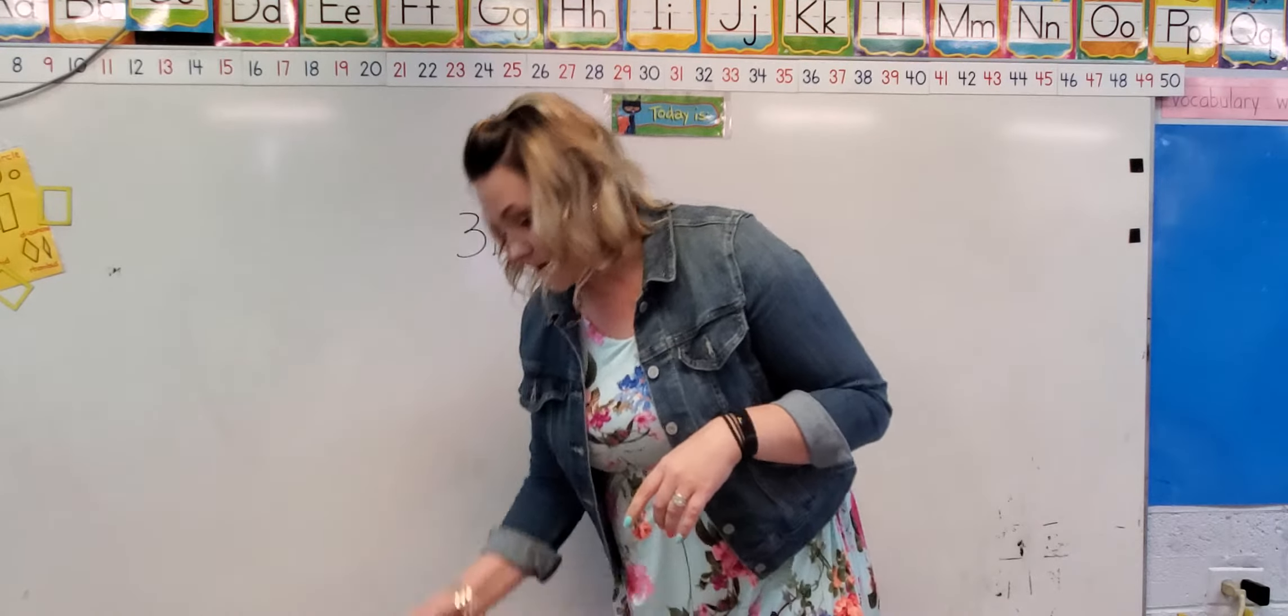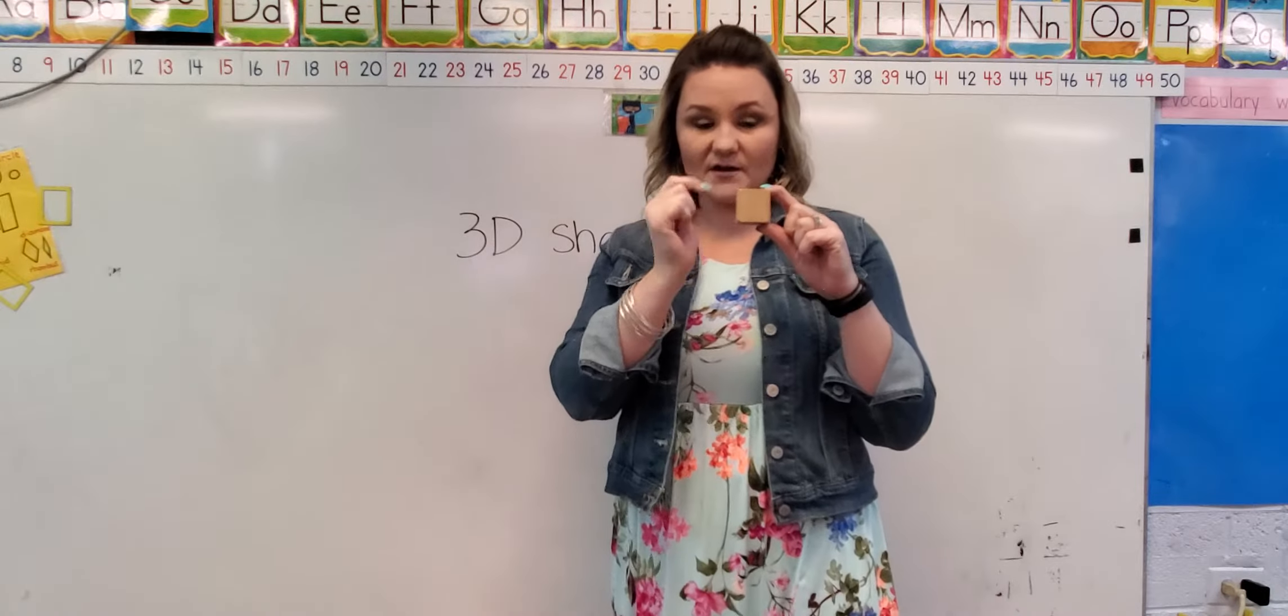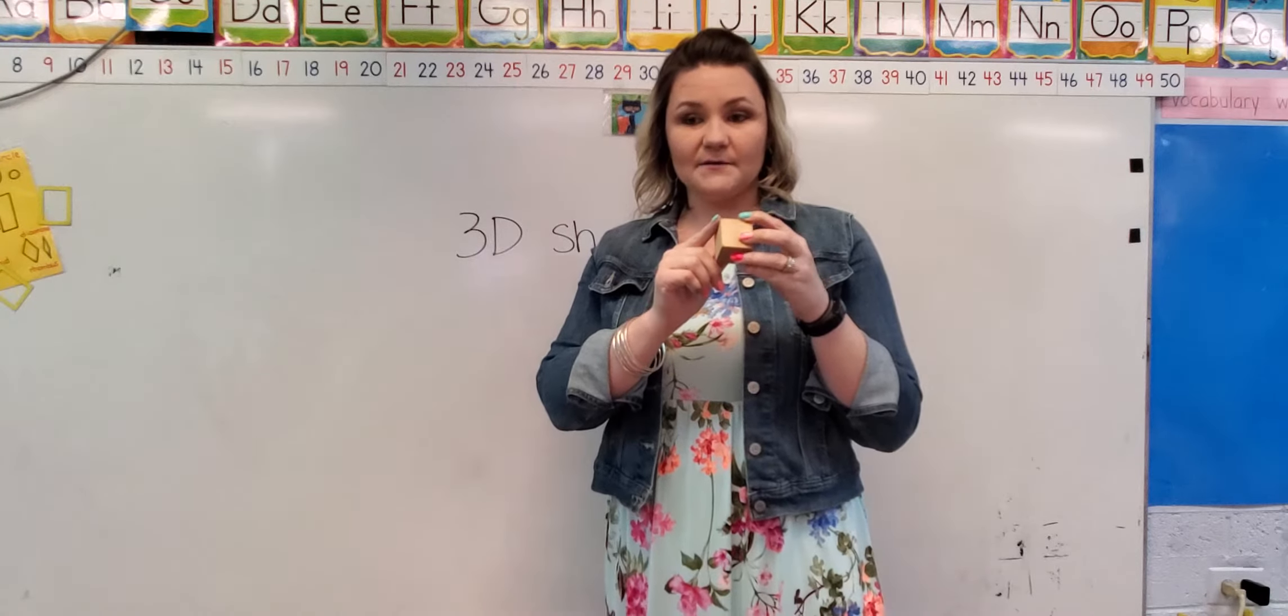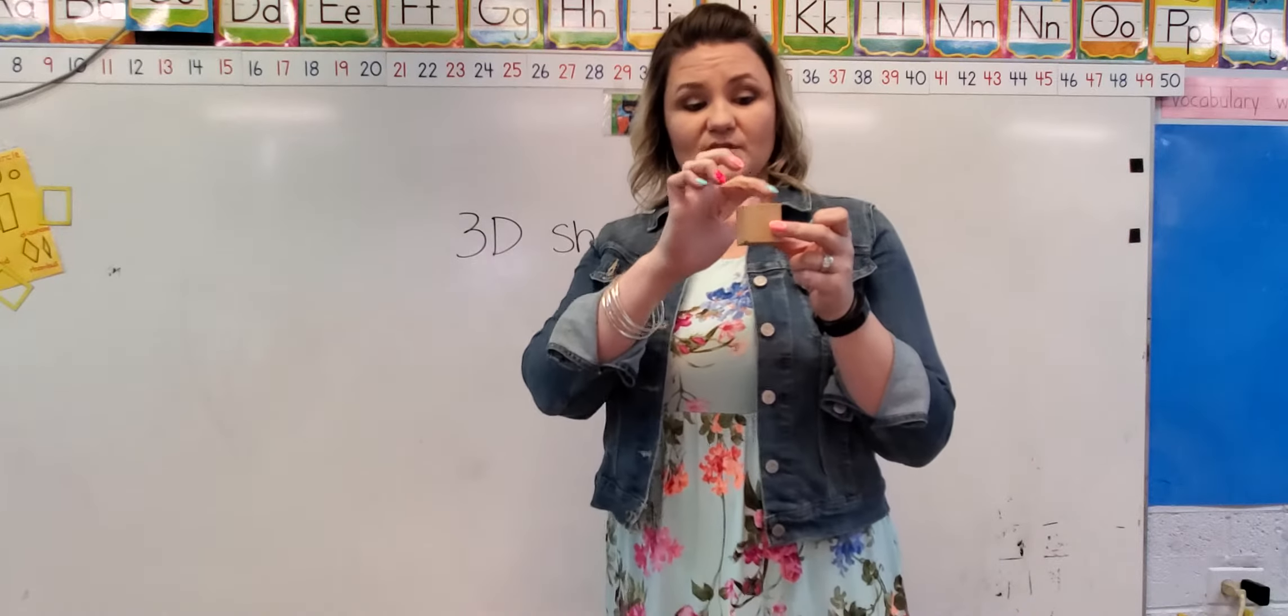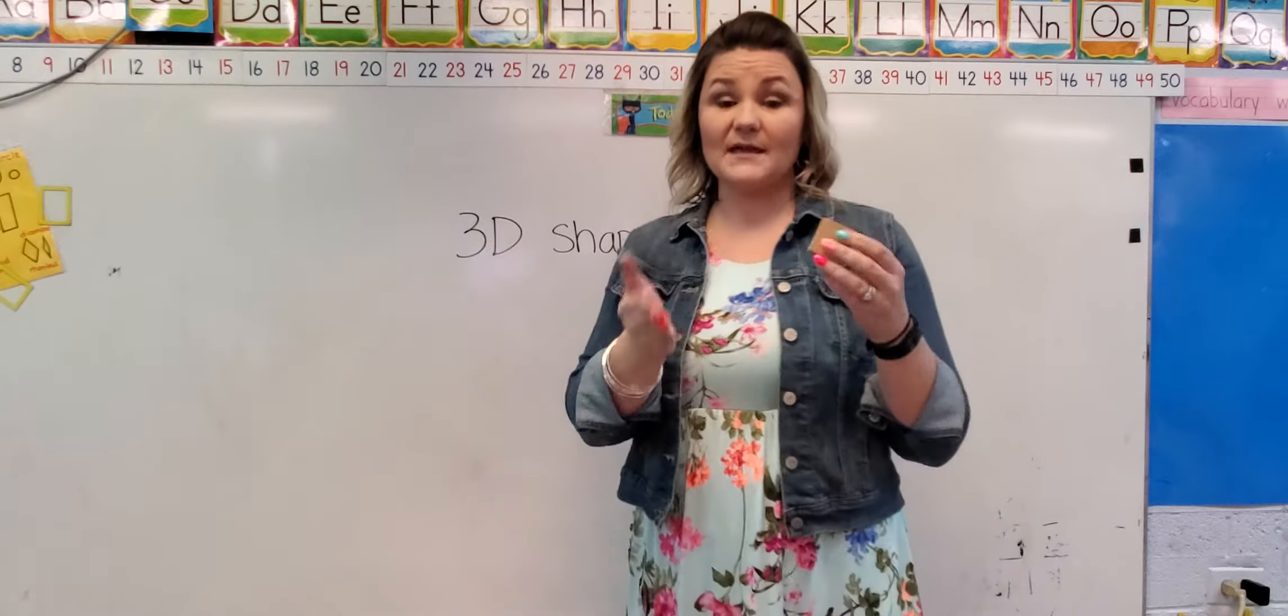Another one that we talk about is a cube. A cube has six faces. So remember, the flat part of the faces. Now, it's got quite a few corners and sides. So it's got 1, 2, 3, 4, 5, 6, 7, 8 corners and then the sides again are where they meet.